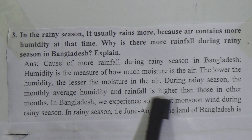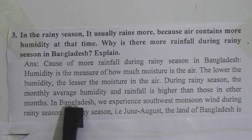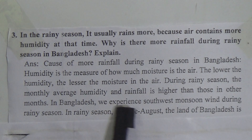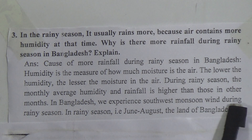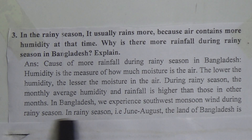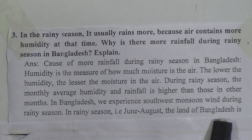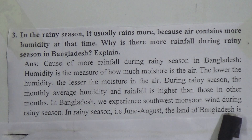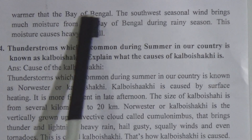During rainy season, the monthly average humidity and rainfall is higher than those in other months. In Bangladesh we experience monsoon wind during rainy season. In rainy season, that is June to August, the land of Bangladesh is warmer than the Bay of Bengal.